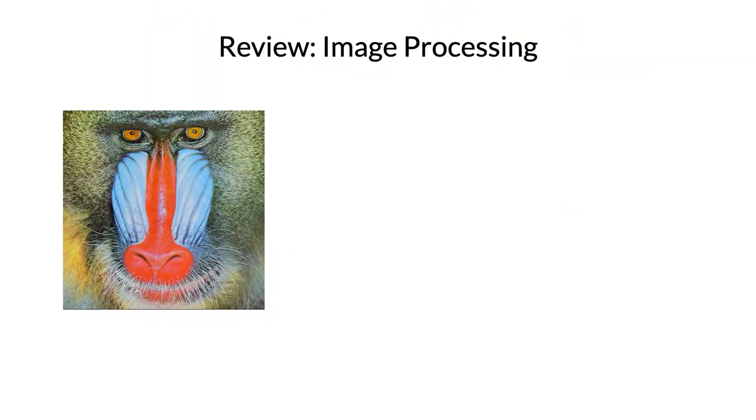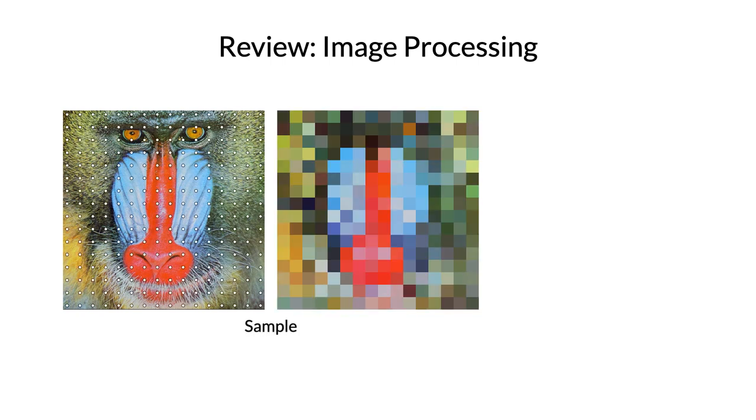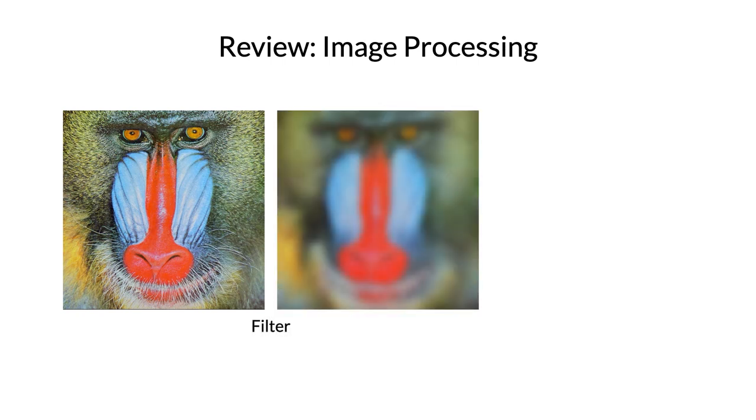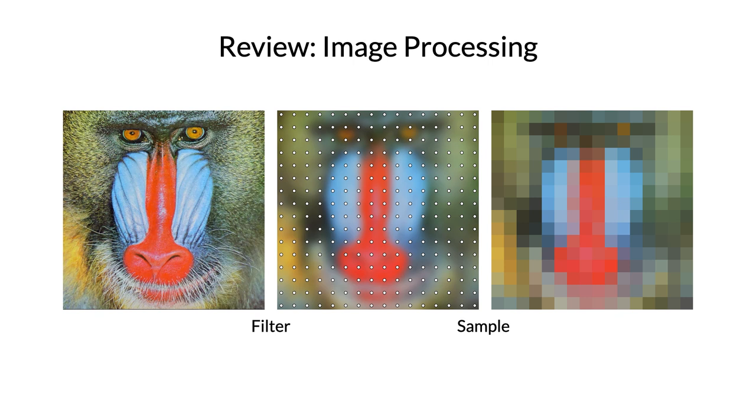To understand why this is happening, it's helpful to review some image processing basics. Let's say you've got an image, like this one here, and you want to downsample it. One way to do this is just basic resampling, where we just grab 16 rows and 16 columns from the image. This is a really bad way to do downsampling, because you get these awful aliasing artifacts, which people in the graphics community usually call jaggies. The fix for this is to filter your image before you sample. Here I'm just applying a gaussian blur, and then doing the same sampling I did before, and you can see that because the image was properly filtered before sampling, you get a reasonable looking downsampled result.